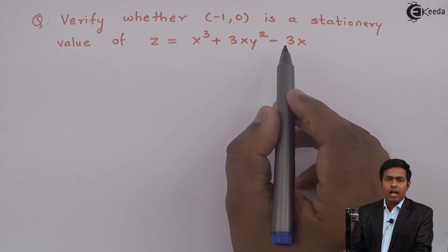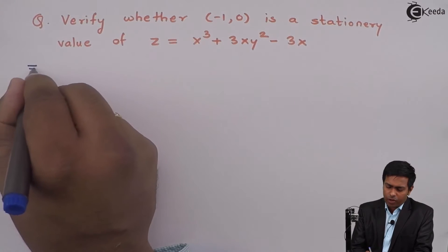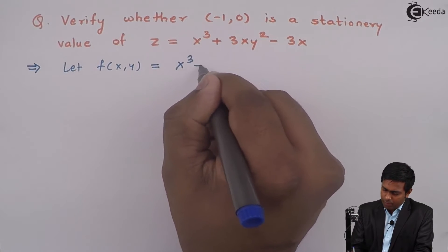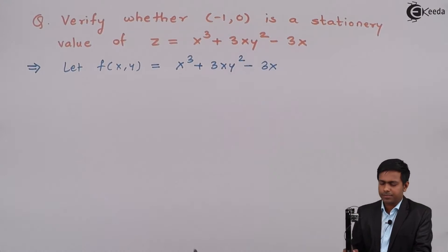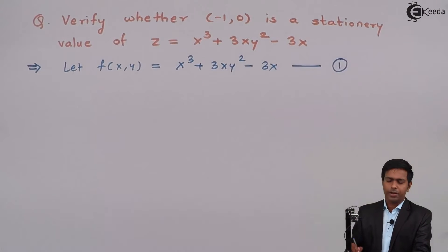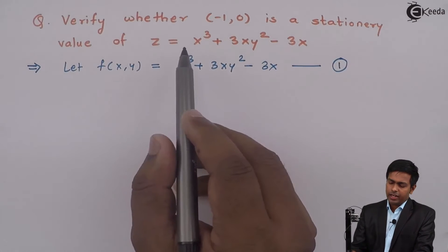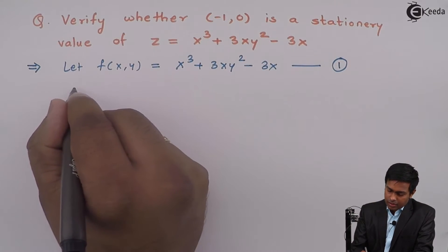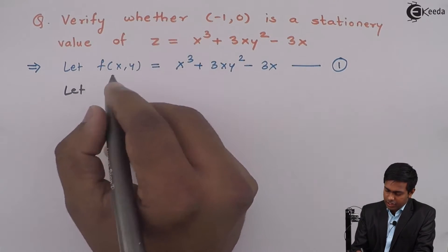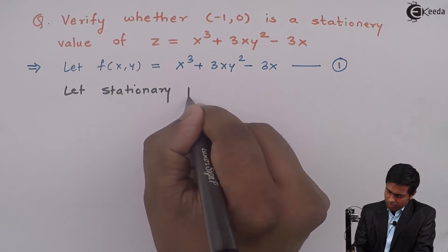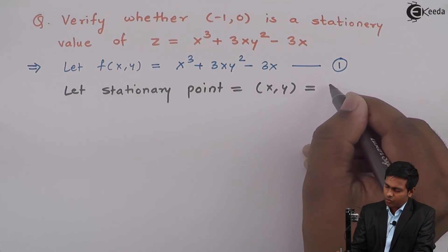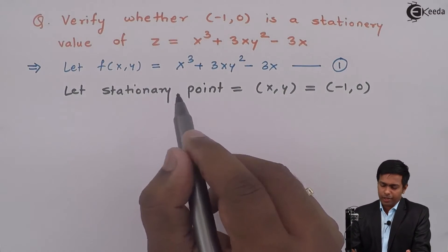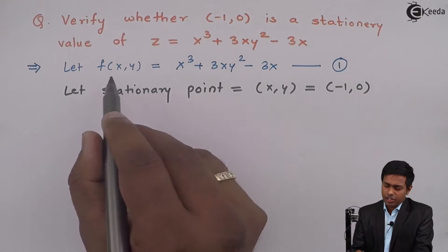Since this function is a function of x and y, first of all I will say let f(x, y) = x³ + 3xy² - 3x, and I will call this equation number 1. Now to check whether it is a stationary point or not, let that stationary point (x, y) = (-1, 0). Now we will check the values of ∂f/∂x and ∂f/∂y.